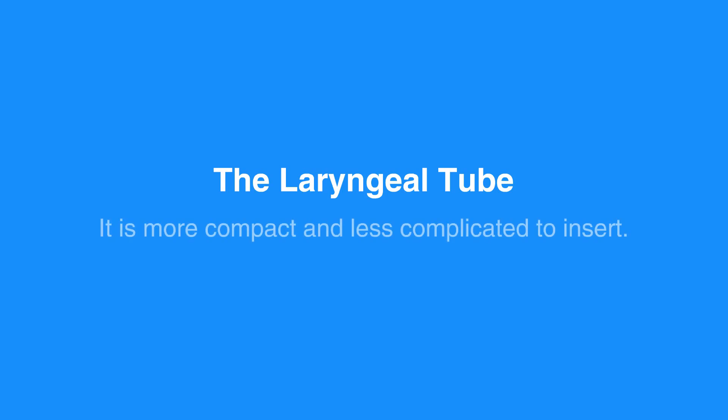The laryngeal tube advantages are similar to those of the esophageal tracheal tube; however, the laryngeal tube is more compact and less complicated to insert. This tube has only one larger balloon to inflate and can be inserted blindly.